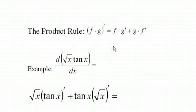The product rule. The simplest way to write the product rule is (f·g)' which means the derivative of f times g equals f·g' plus g·f'.